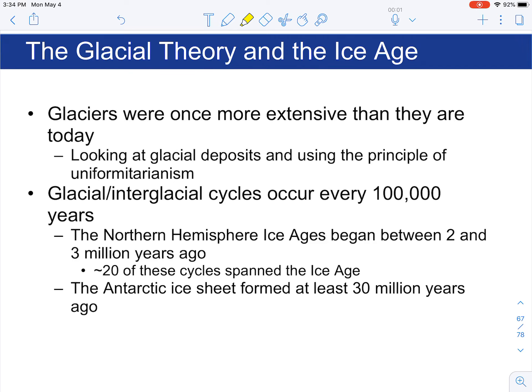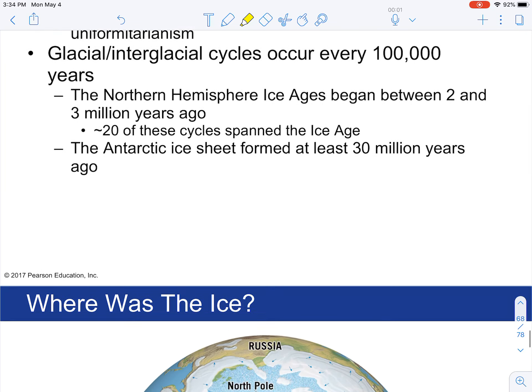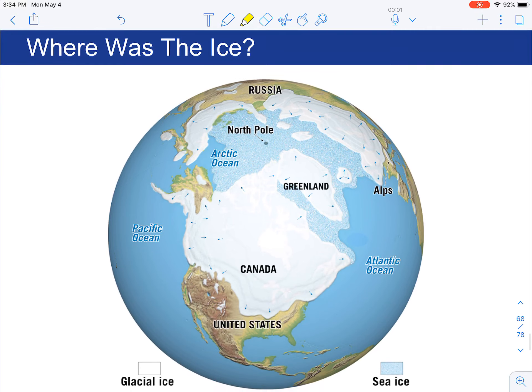The most recent ice age started about 2.6 million years ago and ended about 12,000 years ago. The Antarctic ice sheet, however, is much older than that — polar regions tend to preserve a record that transcends the rest of the world because cooler climates occur for longer periods in those regions. We can use the principle of uniformitarianism to understand climate change throughout geologic time.